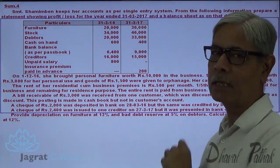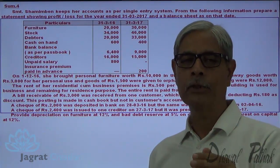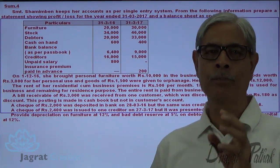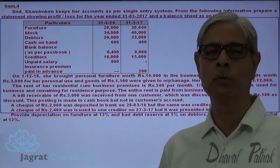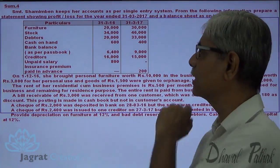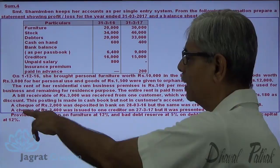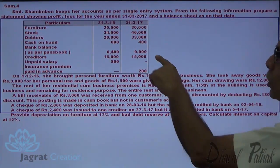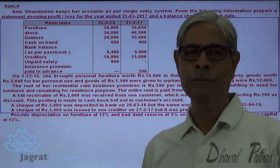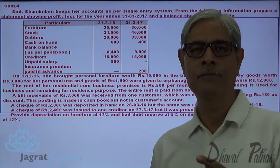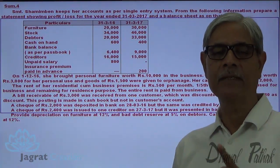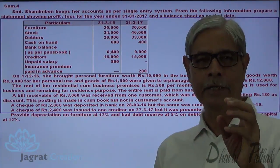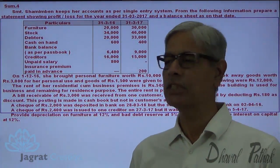The balance as per passbook is 6,400. You are required to add the cheque deposited because it is not yet recorded in the bank passbook, so from the trader's point of view you add the cheque deposited to the 6,400. Similarly, a cheque of 2,400 was issued to a creditor but not presented to the bank in the month of April. Since cheque issued decreases the bank balance, it should be deducted, and that reduced balance will appear in the closing statement of affairs.